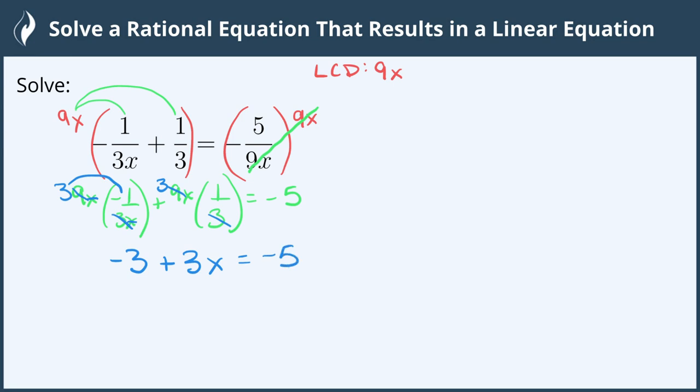Let's go ahead and solve for x by adding 3 to both sides. So we have 3x equals negative 2, divide by 3 which gives us x equals negative 2 thirds. And we're all done!